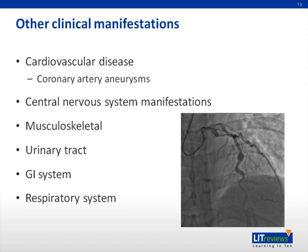Other clinical manifestations not included in the clinical criteria are commonly present. GI symptoms include vomiting, diarrhea, or abdominal pain. Pulmonary symptoms include interstitial infiltrates and/or effusions. Children typically have significant irritability, likely due to aseptic meningitis, mild hepatitis, urethritis with sterile pyuria, and arthritis, or a combination of all of the above. Arthritis may occur earlier during the subacute phase of the illness.